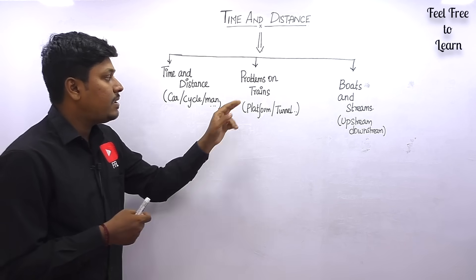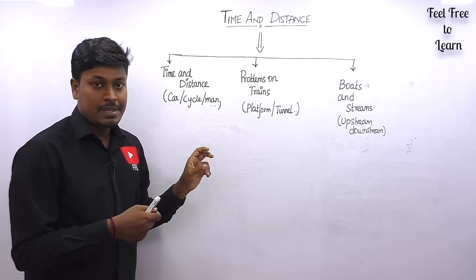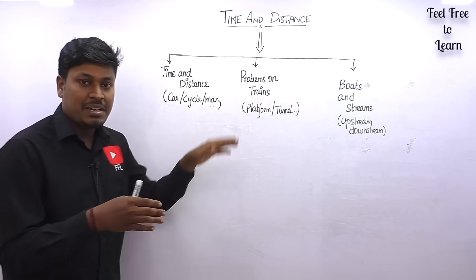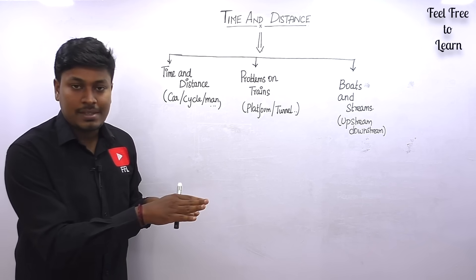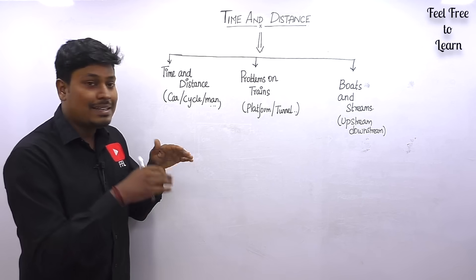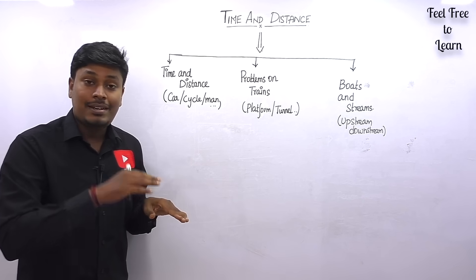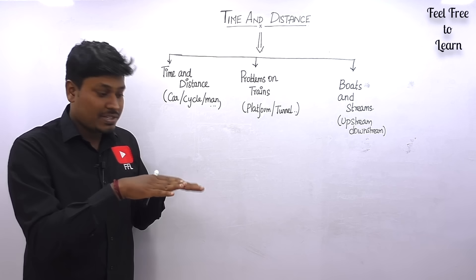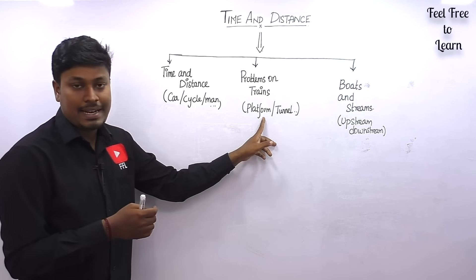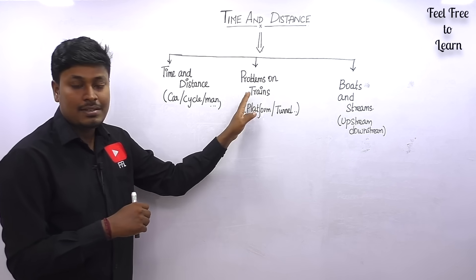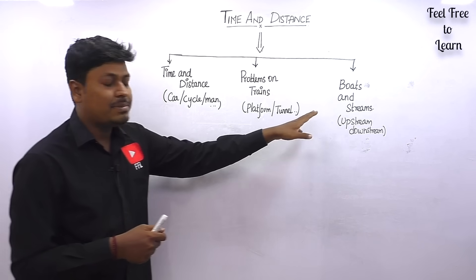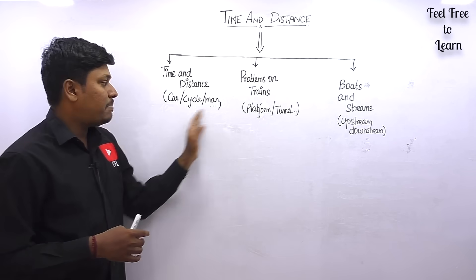The second category is problems on trains, which is very important. Inside this category you can see questions like two trains crossing, train one and train two proceeding towards each other, a train crossing a platform, a train crossing a tunnel, or two trains running in a parallel direction — all questions completely based on trains.